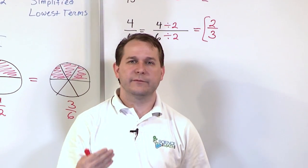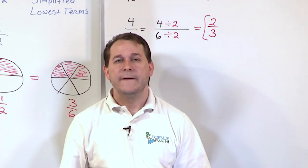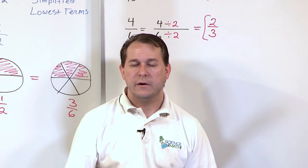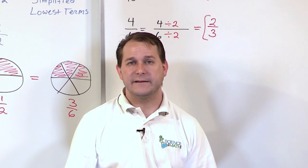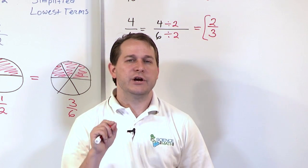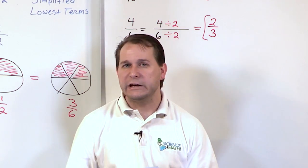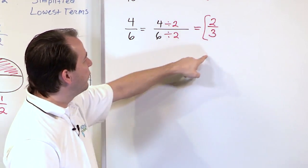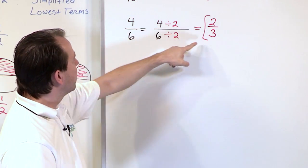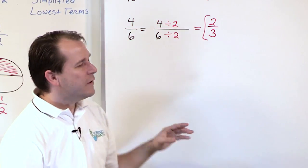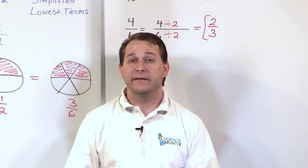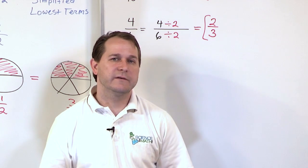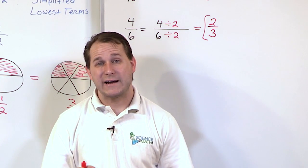This is going to happen a lot. We're practicing now because when you add and multiply fractions later, you'll get an answer and have to simplify it every time. The key takeaway is that you can multiply or divide any fraction by anything you want as long as you do it to the top and the bottom. Here we divided to make it simpler, but notice going backwards: multiply 2 thirds by 2 on top and bottom and you get 4 sixths. Multiplication and division are opposites of each other. I'm Jason with ScienceAndMath.com — follow me to the next lesson for more practice with simplifying fractions.